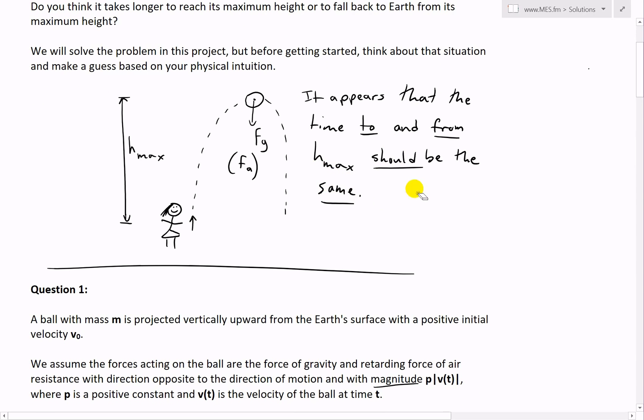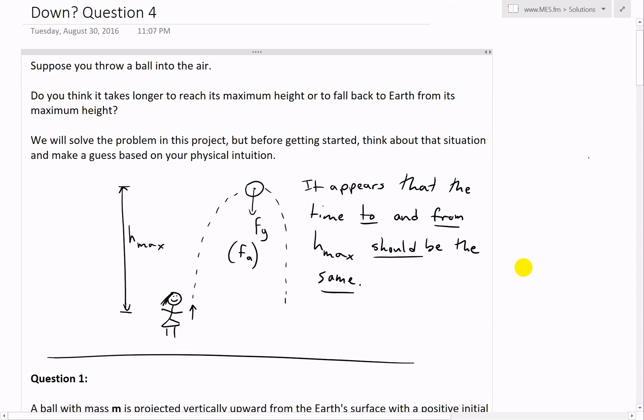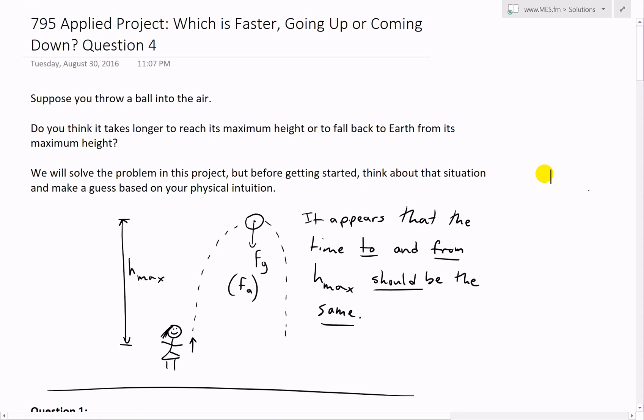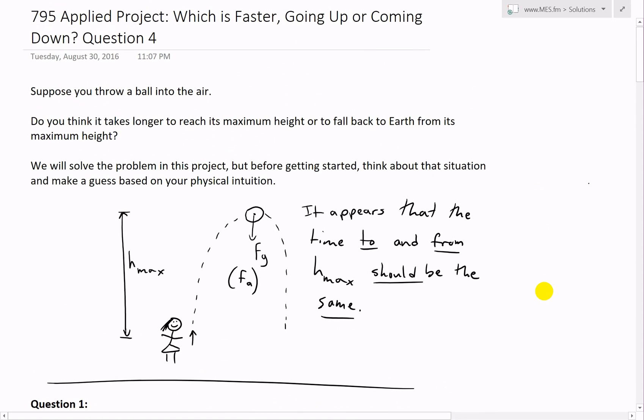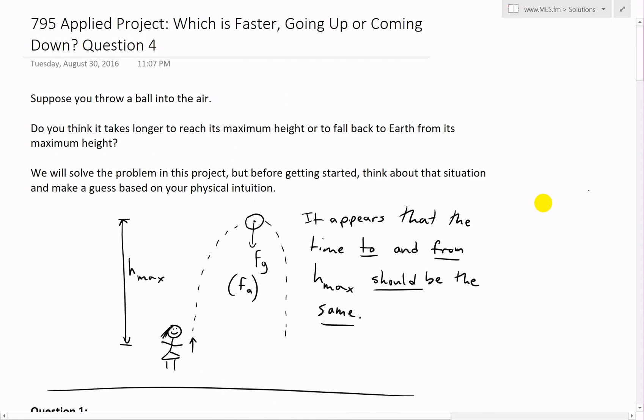It turns out that initially going up is faster than coming back down, which is quite fascinating. That is all for today. Hopefully you'll learn from this pretty interesting video on the motion of a ball and some interesting physics. It was different than what I initially predicted. Like always, you can download these exact notes in the link below. Thanks for watching and stay tuned for another Math Easy Solution.